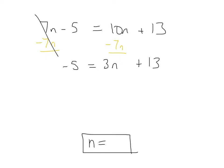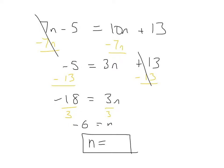Now we just have a two-step equation. I have a plus 13 I've got to get rid of, and then a times 3 I have to get rid of. Let's get rid of the plus 13 by subtracting 13 from both sides. Negative 5 minus 13: 5 and 13 add to 18, giving us negative 18 equals 3n. Last step: divide by 3 on both sides, and you get n equals negative 6.